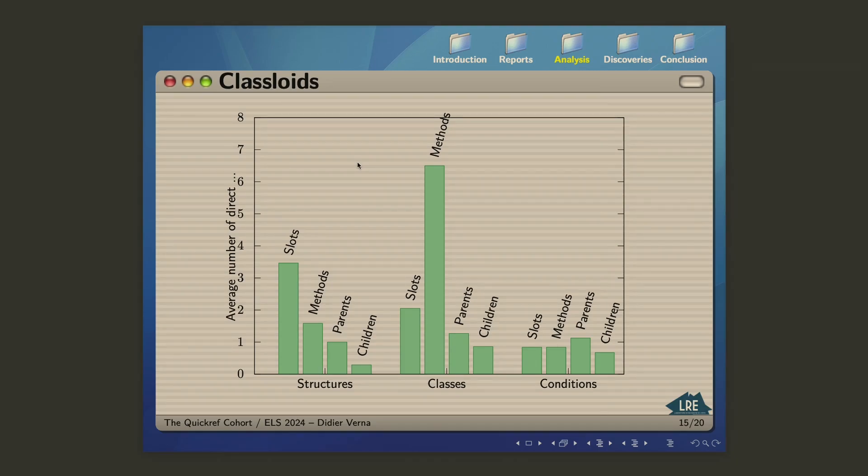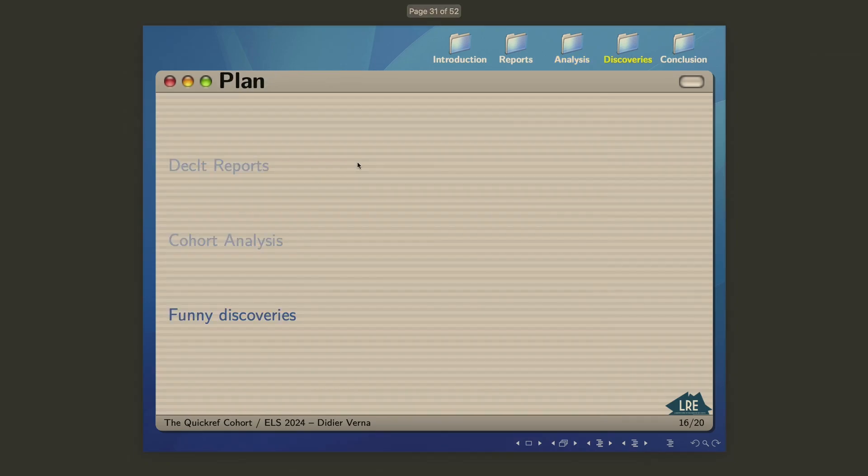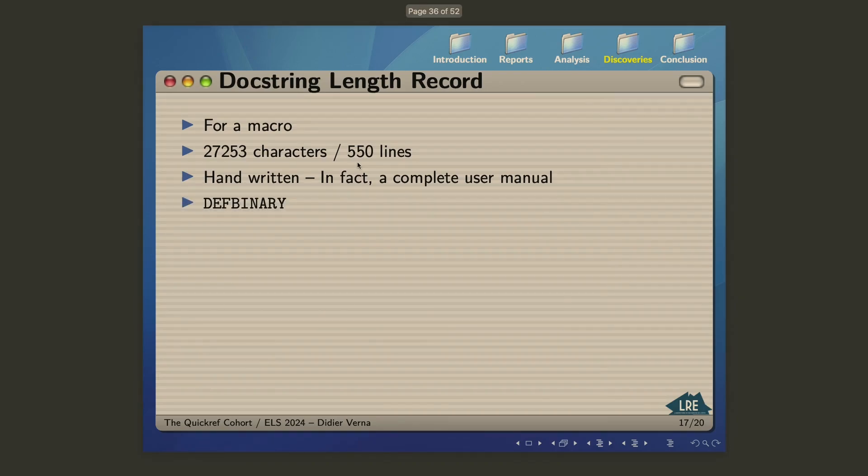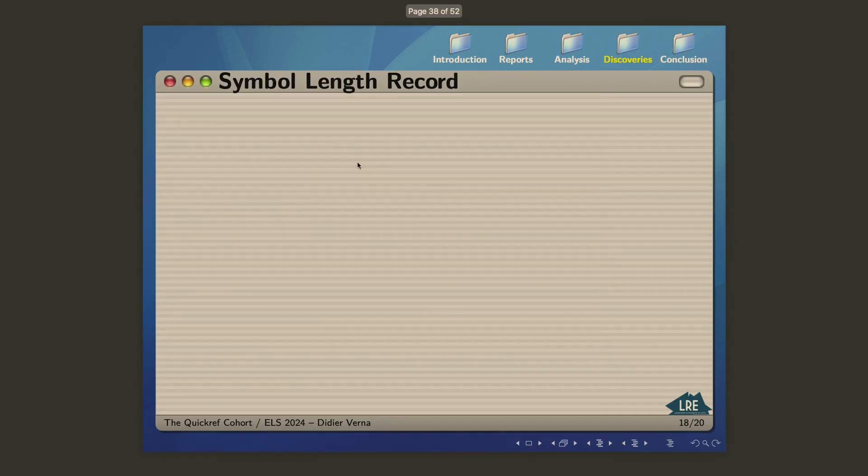So this was just three typical examples of interesting insight that you can get. And now let's get back to the funny discoveries that I made while doing this work because there is a number of those. There is a docstring length record, first of all. It's for a macro. The docstring for the macro is almost 30,000 characters long. I looked at the code because I have the name of the guy who did this. It's handwritten, it amounts to 550 lines and it's actually a complete, a completely handwritten user manual for the library. It's just put directly in the docstring of the macro in question.